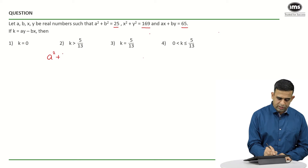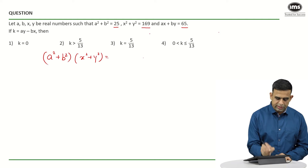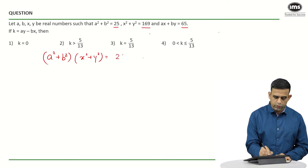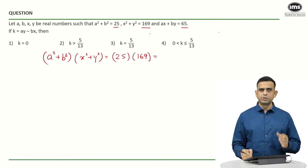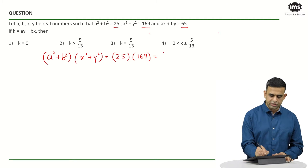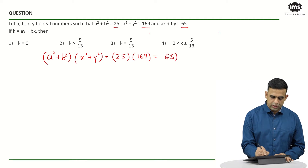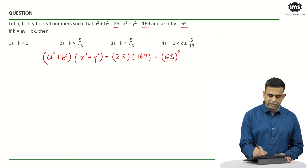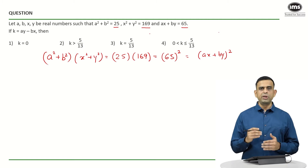Let me write this down: (a² + b²)(x² + y²) should be equal to 25 × 169, which is 5² × 13² = 65². Now the term 65 can be replaced by (ax + by)², so we have (a² + b²)(x² + y²) = (ax + by)².